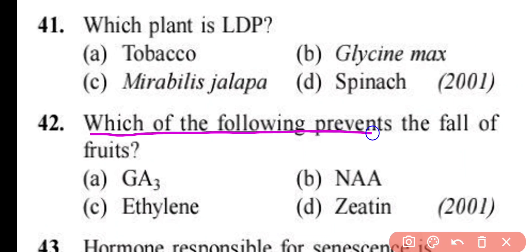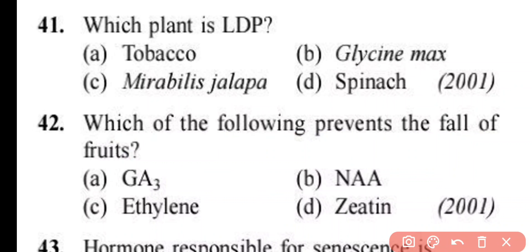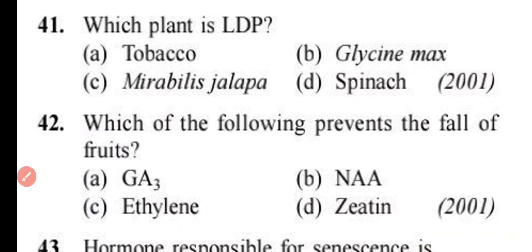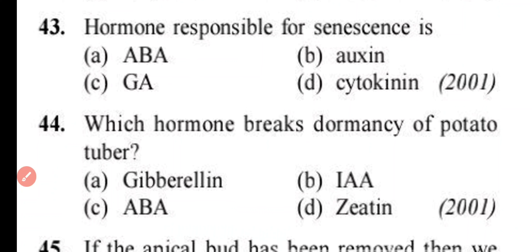Question number 42. Which of the following prevents the fall of fruits? GA3, NAA, ethylene, or zeatin. Correct answer is option B. Naphthalene acetic acid is used to prevent the fall of fruits.